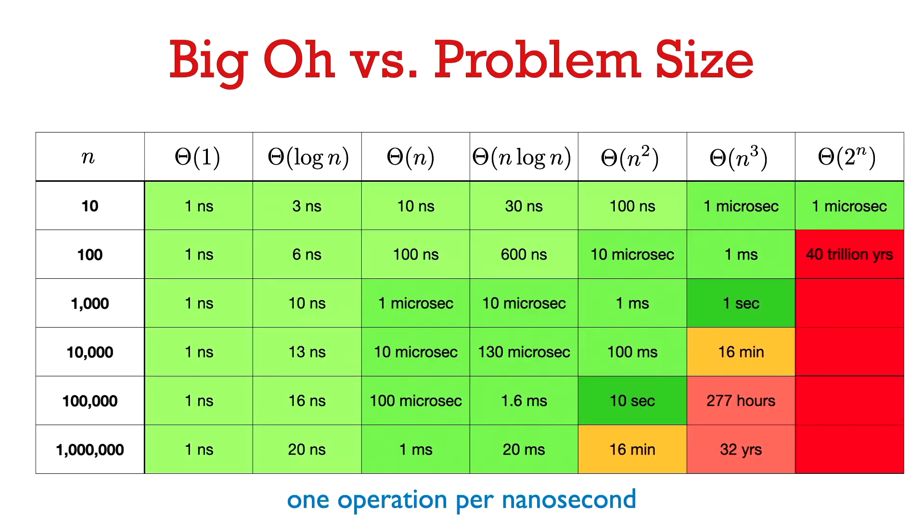Here's an example, just to make this more concrete, of what runtimes you can roughly expect by an algorithm with these common big theta complexities. Of course, we know that big theta hides a constant factor, so just from the big theta complexity, we can't really tell you what the runtime is on these finite values of n here.